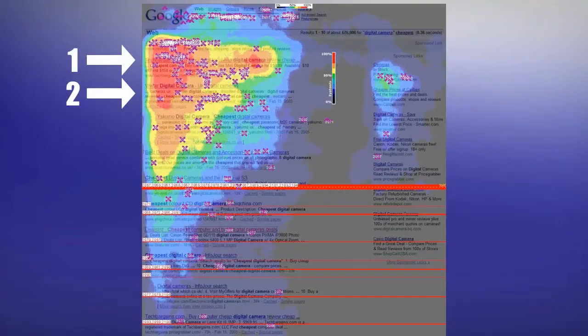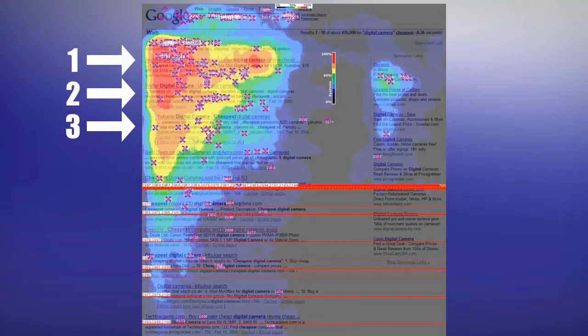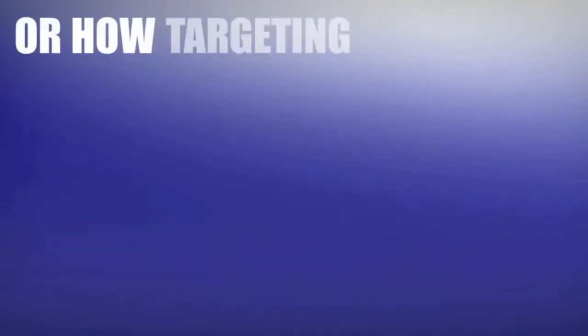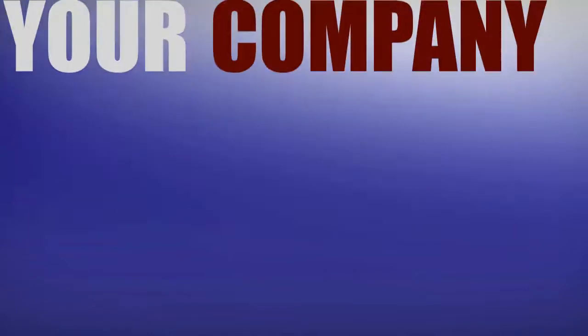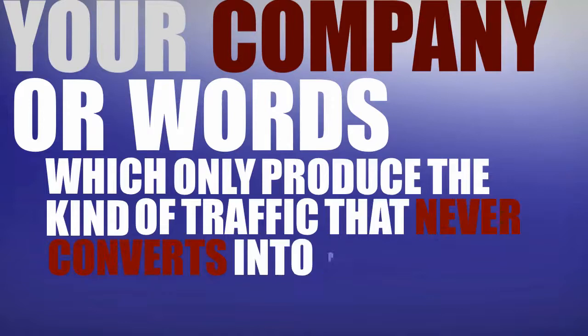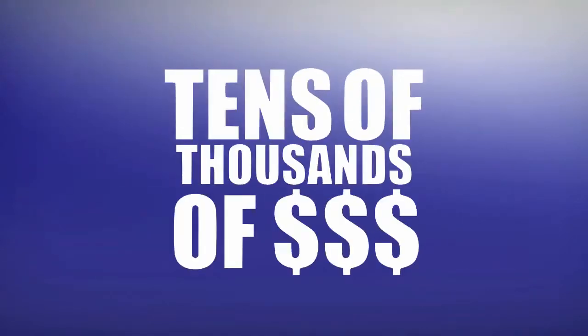But what you may not know are the insider secrets many SEO companies just don't want you to know. Secrets like, if you're not in spot one, two, three or ten of the first page on Google, you'll be left fighting over the 3% of remaining traffic. Or how targeting the wrong keywords, words which no one would ever use to try and find your company or words which only produce the kind of traffic that never converts into profits, can cost you tens of thousands of dollars.